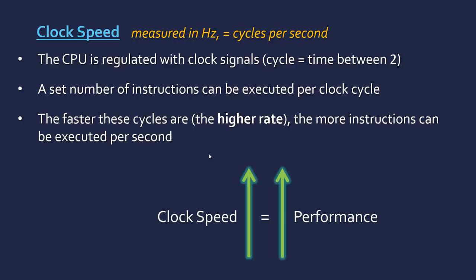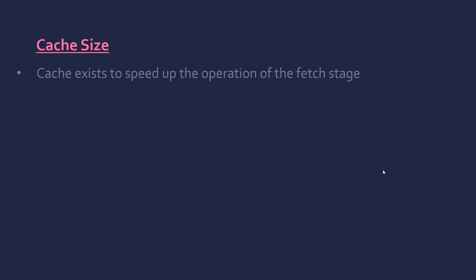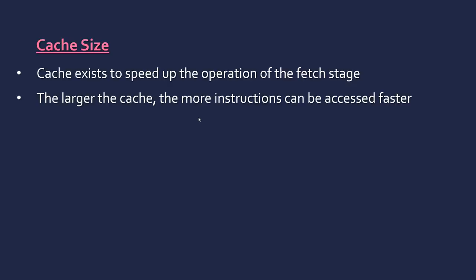Effectively, increasing the clock speed will increase the speed overall. The second factor is the size of the cache. The cache is a very small, fast store of data that is there to speed up the operation of the fetch stage — it acts as a bridge between the memory and the processor. It's like a pool of memory used to speed up operation by storing frequently used instructions and occasionally intermediate steps, so it doesn't have to keep going back to the slower main memory; it goes to the faster cache instead.